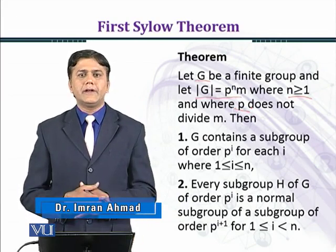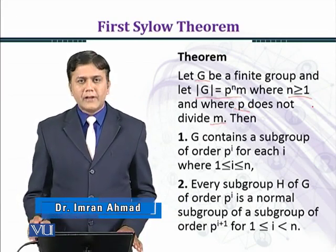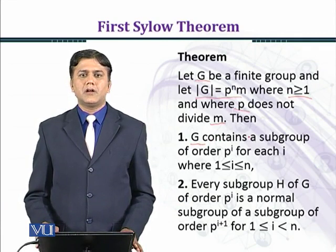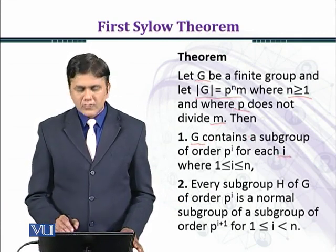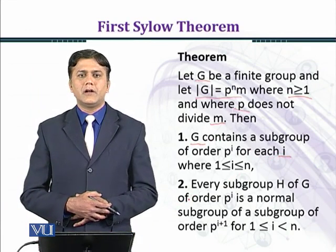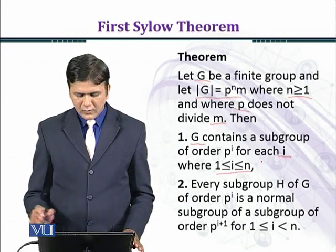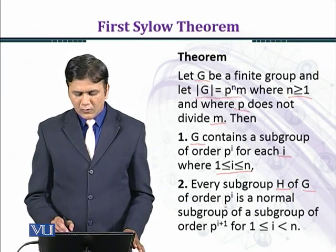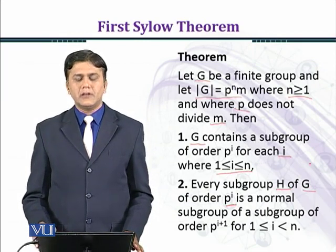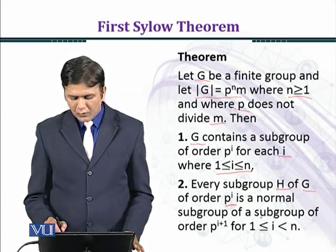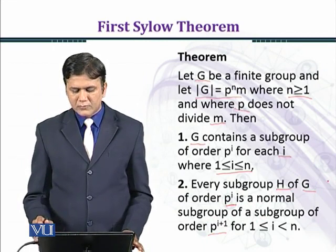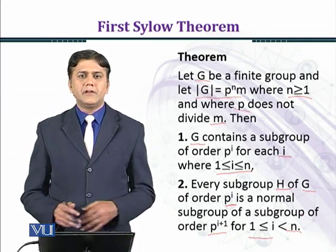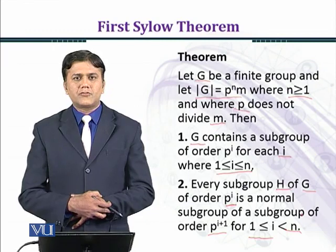Then: number one, G contains a subgroup of order P raised to power I for each I where 1 ≤ I ≤ n. Number two, every subgroup H of G of order P raised to power I is a normal subgroup of a subgroup of order P^(I+1), for I greater than or equal to one and less than n.